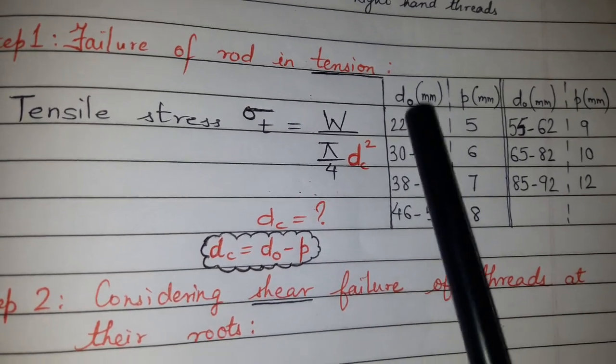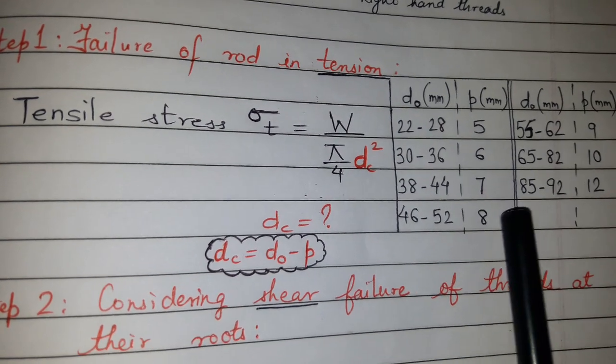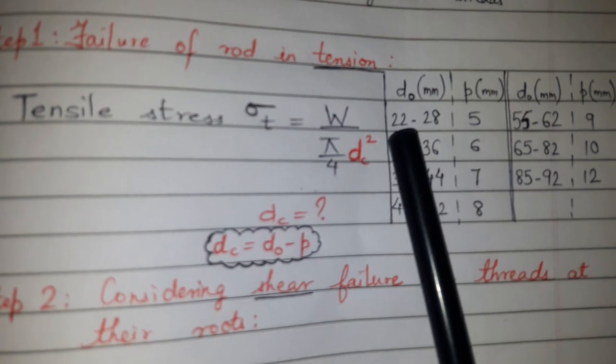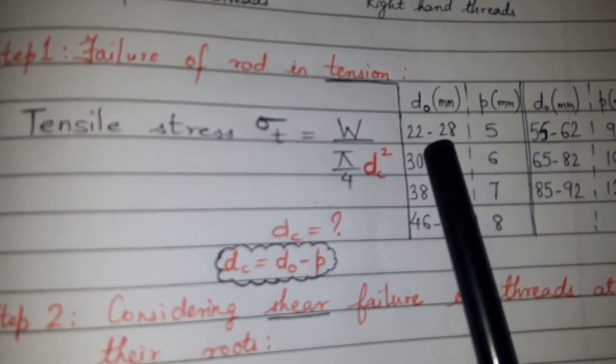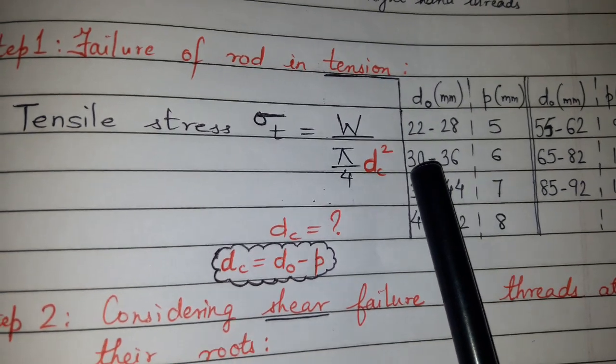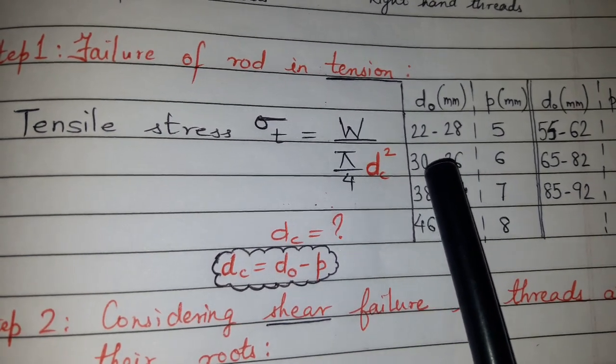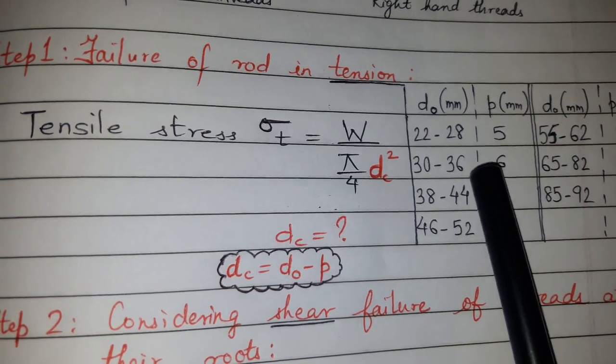Nominal diameter—they will give a table, or you can memorize this for quick use during examination. For example, 22 to 28 will come in 4 steps: 22, 24, 26, 28, and for this you can take pitch as 5. For 30 to 36: 30, 32, 34, 36, you can take pitch as 6, and so forth.